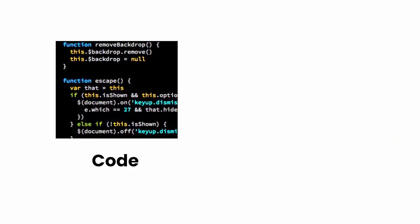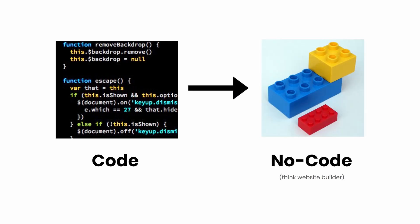Let's break this down. We all know what code is — this is how we traditionally build apps, websites, and software, typing things out letter for letter. Now we're moving away from that and into the no code era, where we're building software without actually writing code.